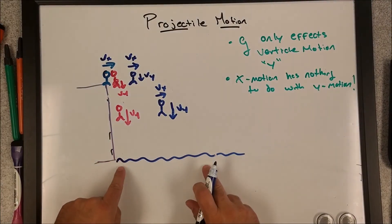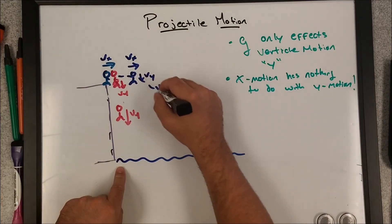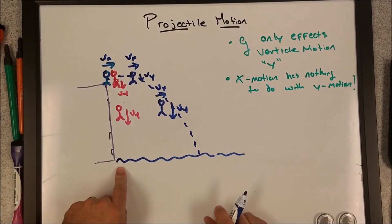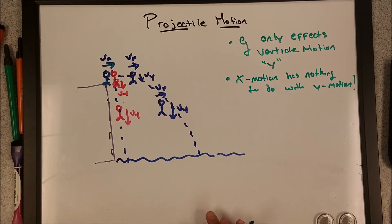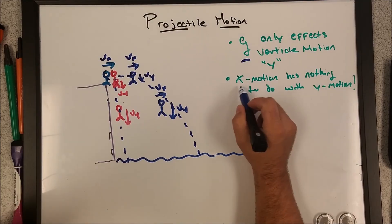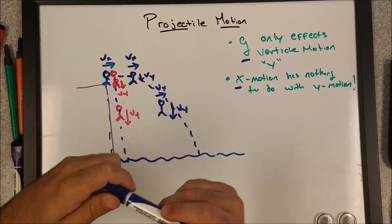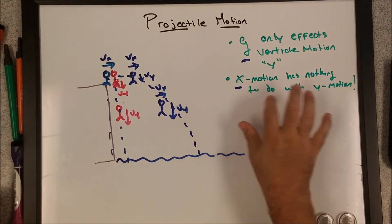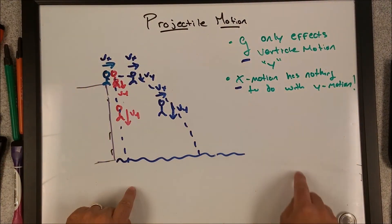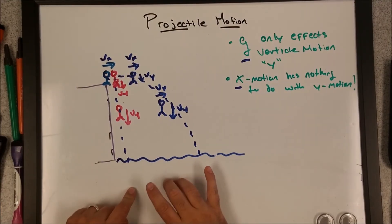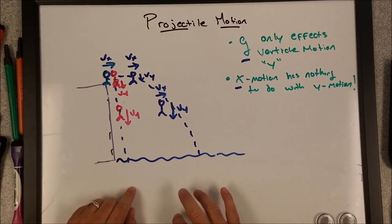They're going to keep doing this until they splash into the water. This guy's traveling in that parabolic path, and this one is just straight down. G only affects the Y, and X only affects the X. The Y only affects the Y. Do not marry these two together — that's horizontal projectile motion. And the same is true for vertical: G only affects the Y, and the X's and Y's do not go together.